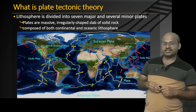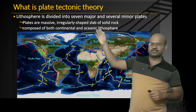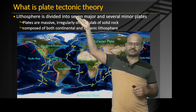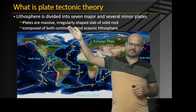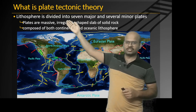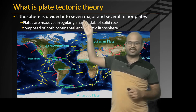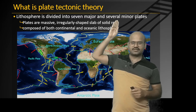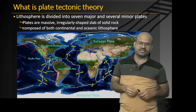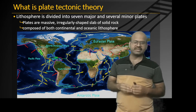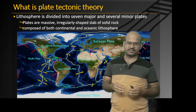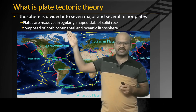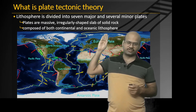Plate tectonic theory states that the lithosphere — everything above the asthenosphere, that is, crust plus brittle mantle — is divided into seven major and several minor plates. These plates are irregularly shaped, move in independent directions with different velocities, and can have both continental and oceanic lithosphere.